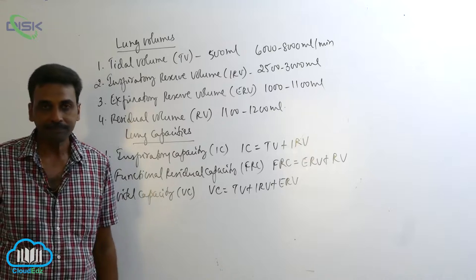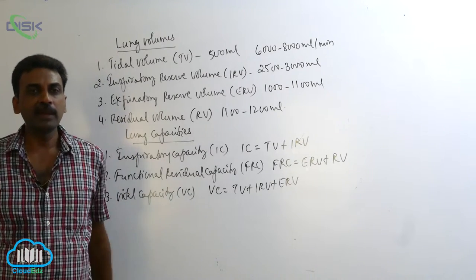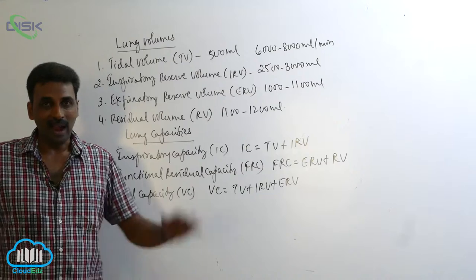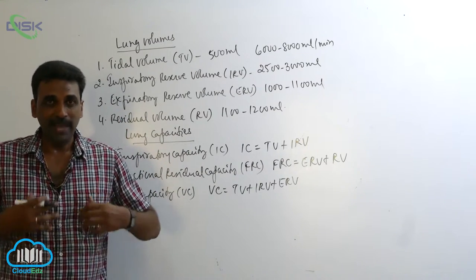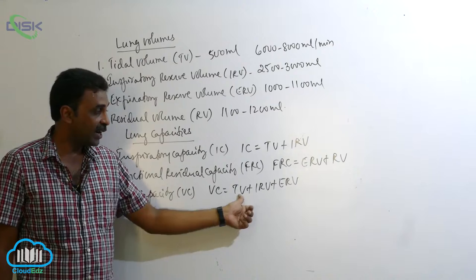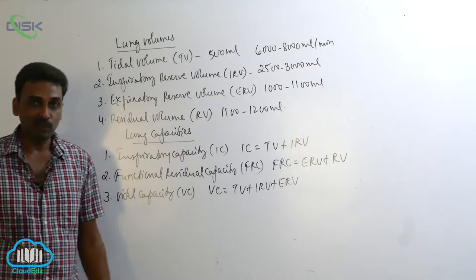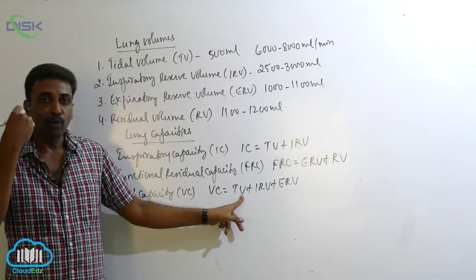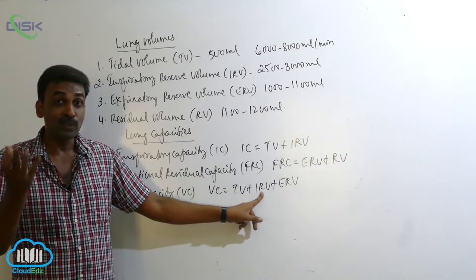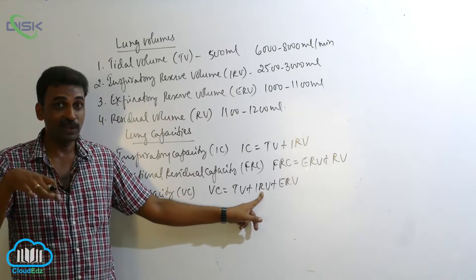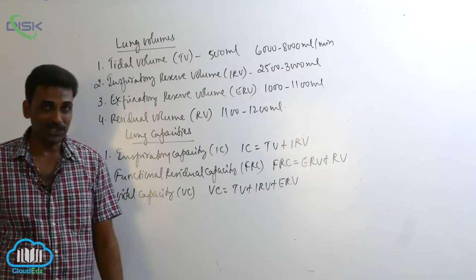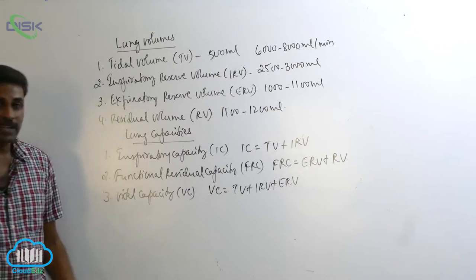Vital Capacity. After taking the deepest breath, the maximum amount of air that a person can exhale is called vital capacity. It includes the tidal volume plus inspiratory reserve volume plus expiratory reserve volume. Tidal volume is the amount of air that a person can inhale or exhale during normal breathing, and these three together make up vital capacity.